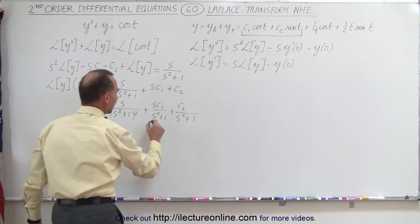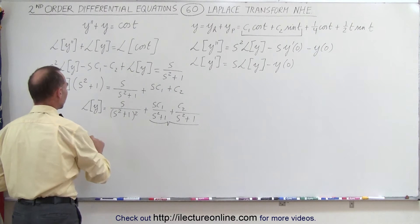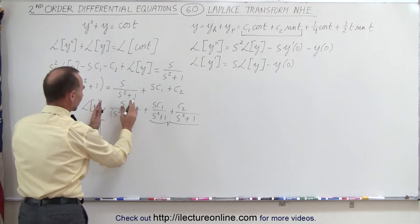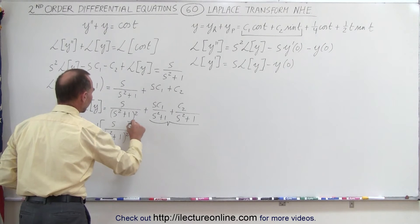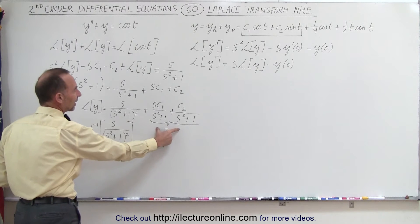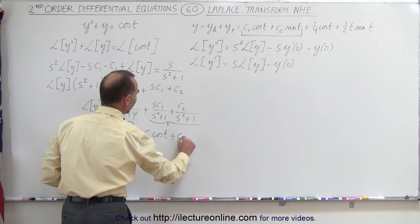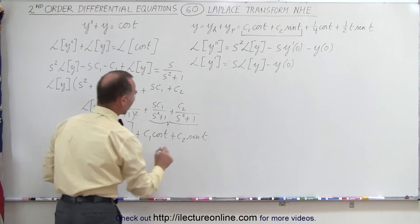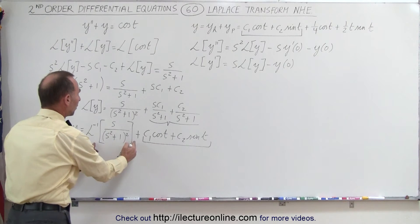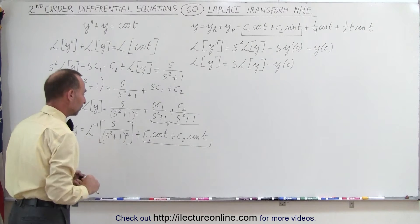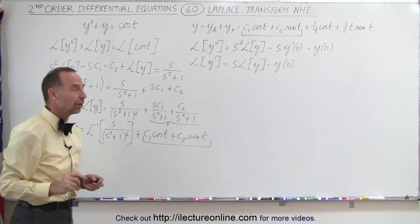Looking at the last two terms, if we take the inverse Laplace transform, y equals the inverse Laplace transform of the first term (to be handled shortly), plus C1 times cosine of t, plus C2 times sine of t. We recognize that C1·cos(t) plus C2·sin(t) represents the homogeneous part of the solution, while the remaining term will represent the particular part. Note that C1 and C2 are unknown since we were not given initial values.